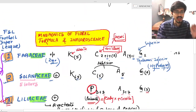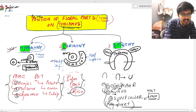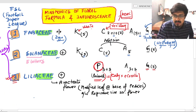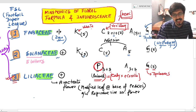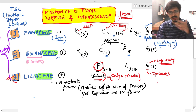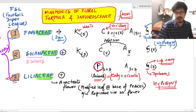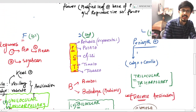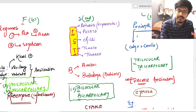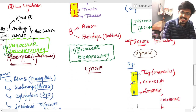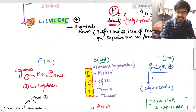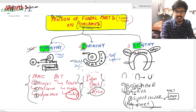BMC pot means hypogyny — as I mentioned earlier. Tulip is also an example of hypogyny: thalamus is inferior, so it is named hypogyny, and the ovary is superior. All three families — Fabaceae, Solanaceae, and Liliaceae — are examples of hypogyny. Once more: F for first, S for second, L for third. If you cannot remember FASL, remember Football Super League. Thank you, please like, share and support us — share the video with your friends, it will definitely help in the final exam. See you in the next video.